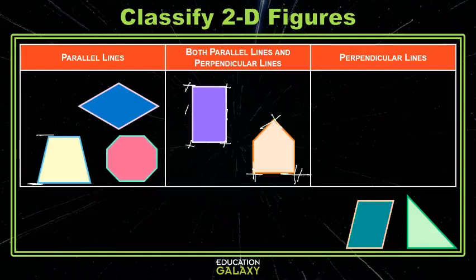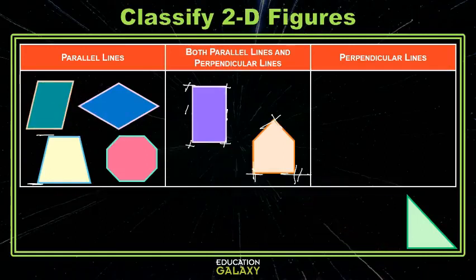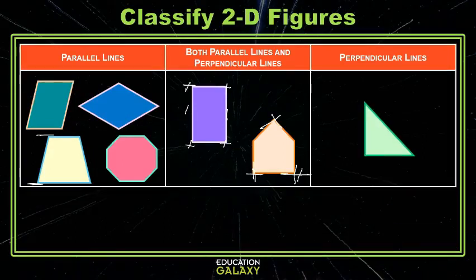And the next parallelogram, by definition, two sets of parallel sides, but no right angles, no perpendicular sides there. And lastly, this triangle has one right angle, which means it does have a pair of perpendicular lines. You see them here.